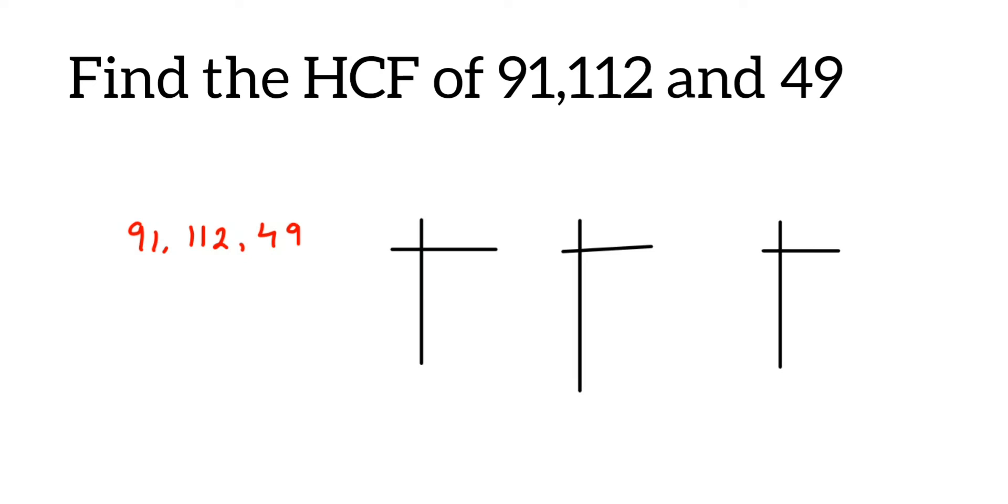49 is very simple: 7 times 7 equals 49. Now for 91, it goes in the 7 table. It doesn't go in 2, 3, or 5, directly 7. So 7 times 13 equals 91, and 13 is a prime number.